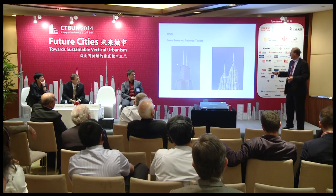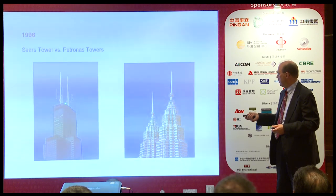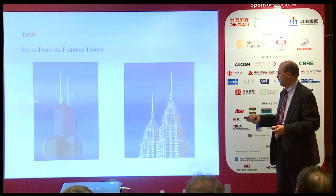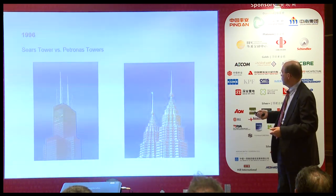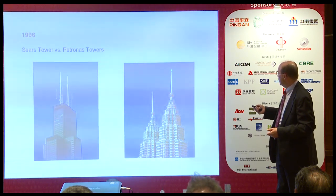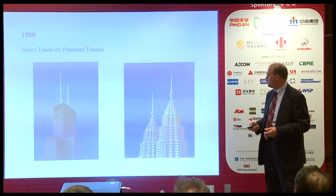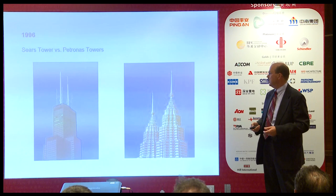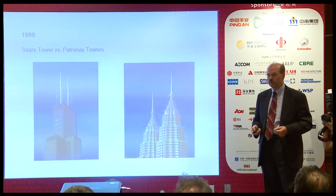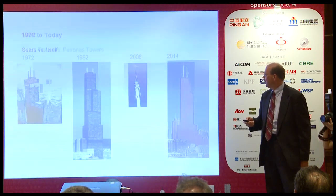Anyway, it was determined that the architectural top, which is the primary measure of Sears Tower, is basically the parapet. The architectural top of Petronas is the top of its spire elements. And thus Petronas, in 1996, became the world's tallest building — or buildings, because they're twin towers.